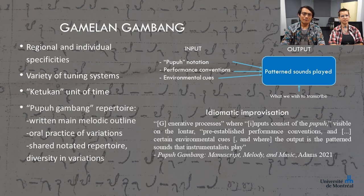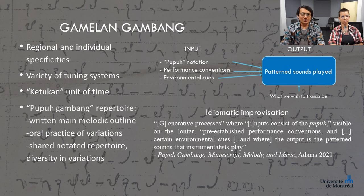Ensemble characteristics may vary depending on the village, the group, or the musicians. Some of these characteristics could be the improvisational techniques or the tuning system used. Variation in pitch and interval arise, since there is no concept similar to the A440 Hz standard found in Western music. The smallest unit of time is called the ketukan. Every unit is always played by at least one instrument. For traditional Pupuh Gambang repertoire, only the main melodic outline is notated, visible as the background of this slide. Although this notation is a useful reminder for the musicians, it doesn't convey everything that is audible.